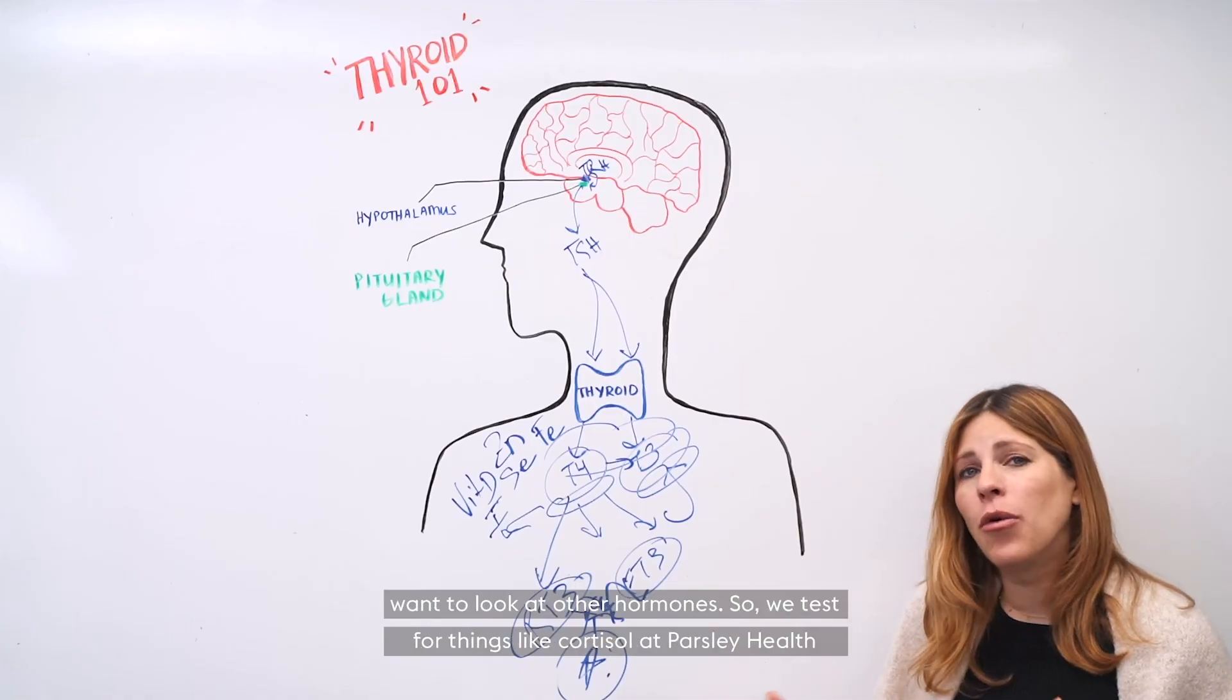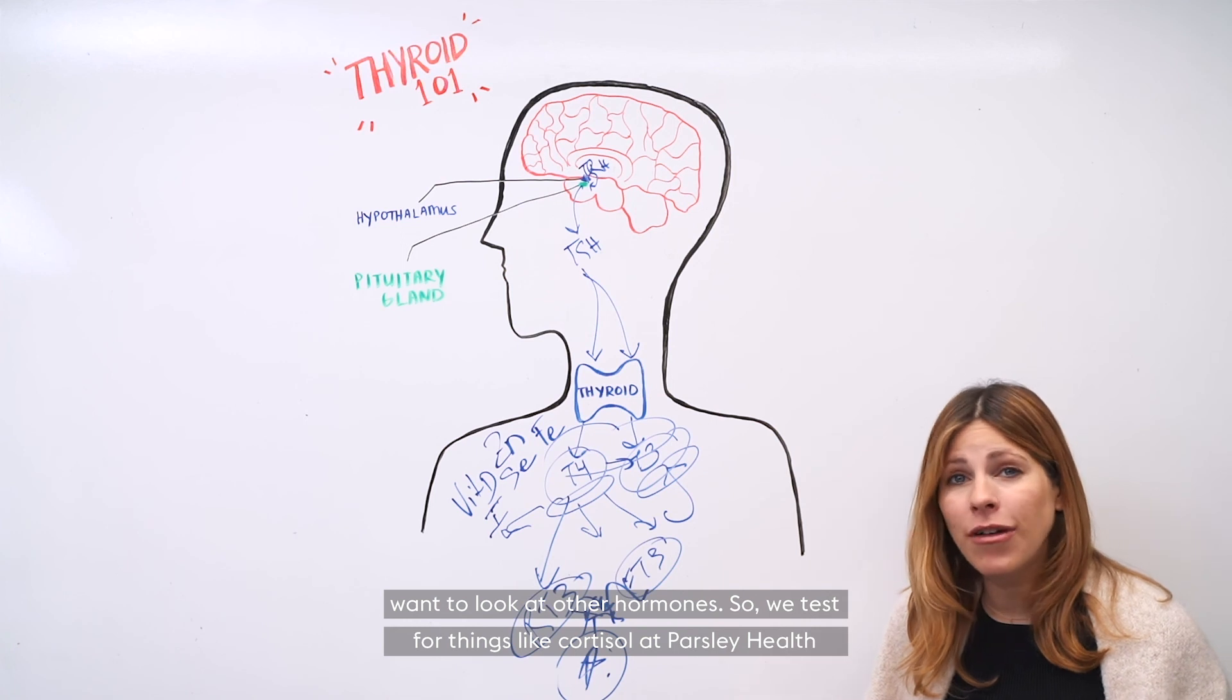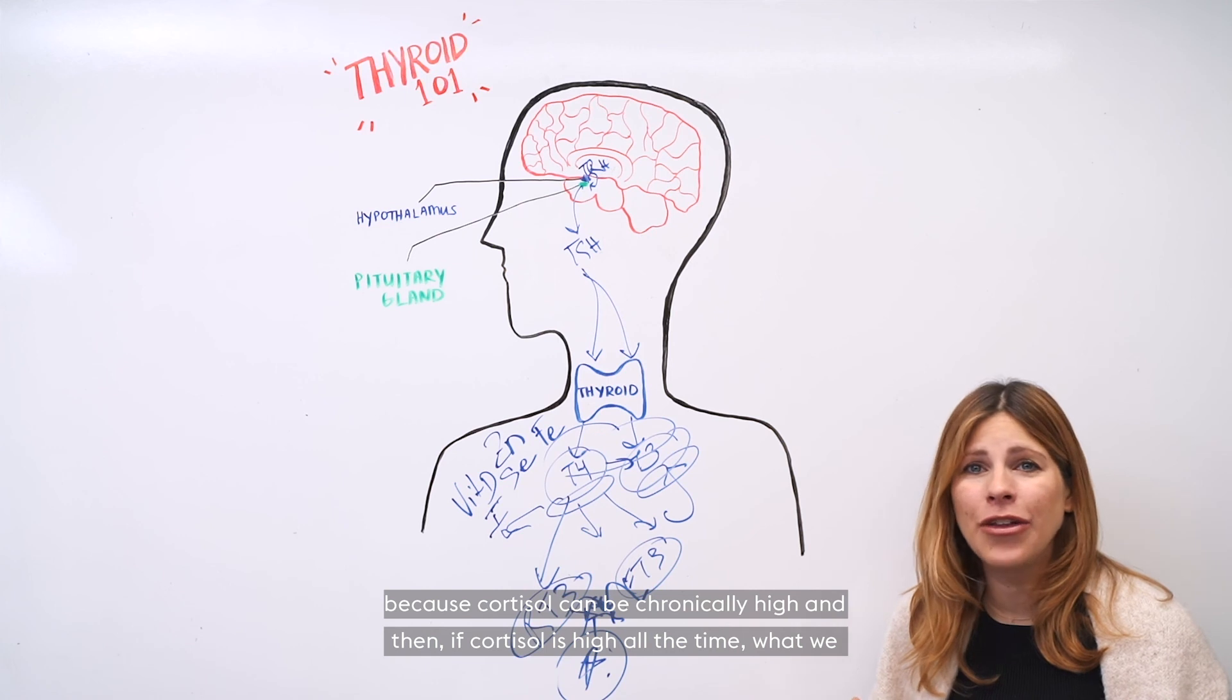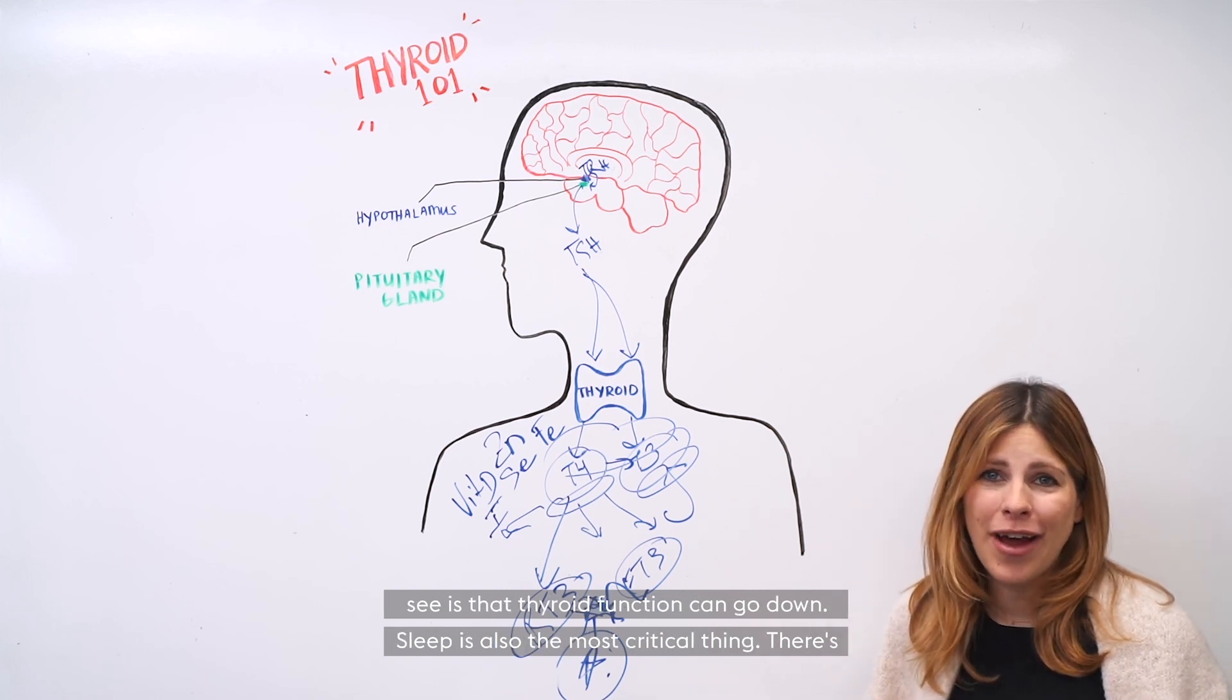And you also want to look at other hormones. So we test for things like cortisol at Parsley Health because cortisol can be chronically high, and then if cortisol is high all the time, what we see is that thyroid function can go down.